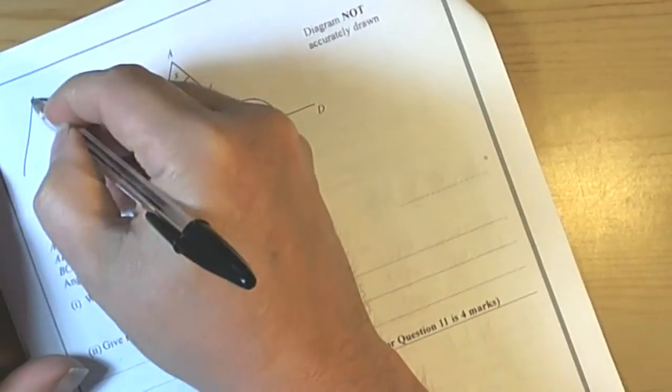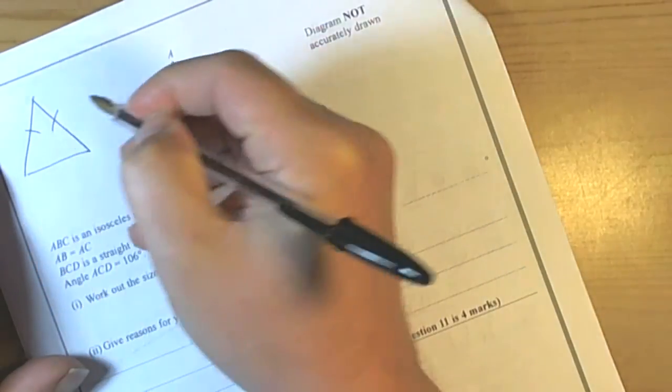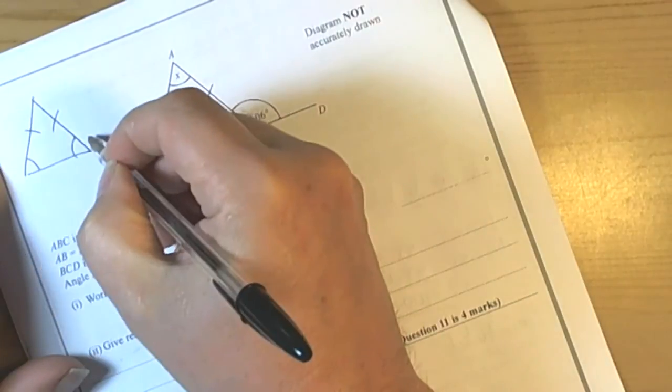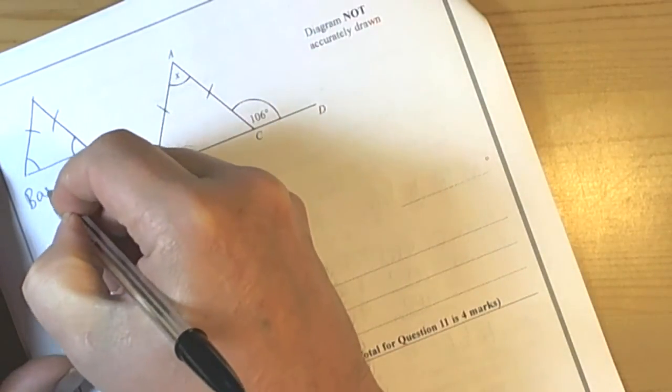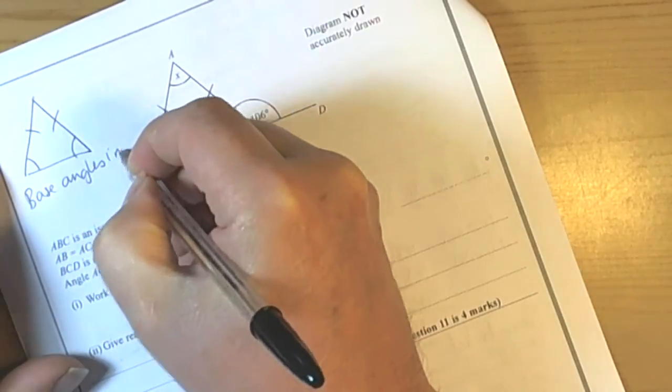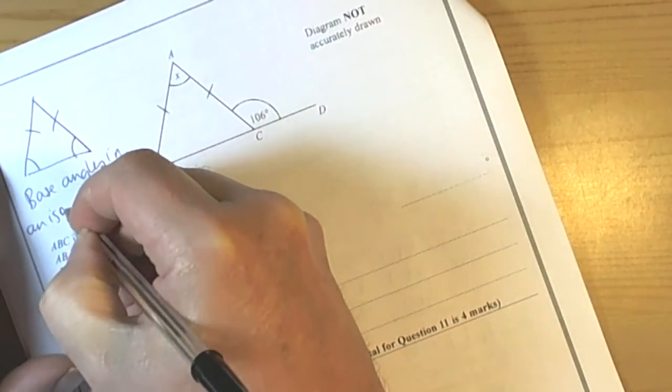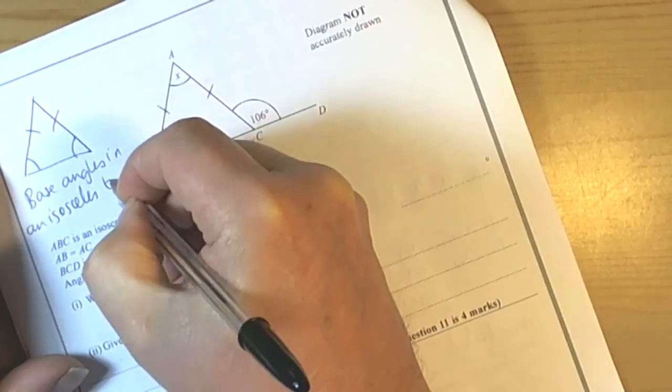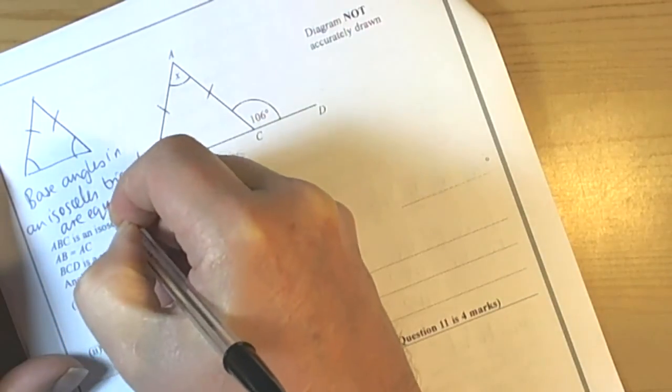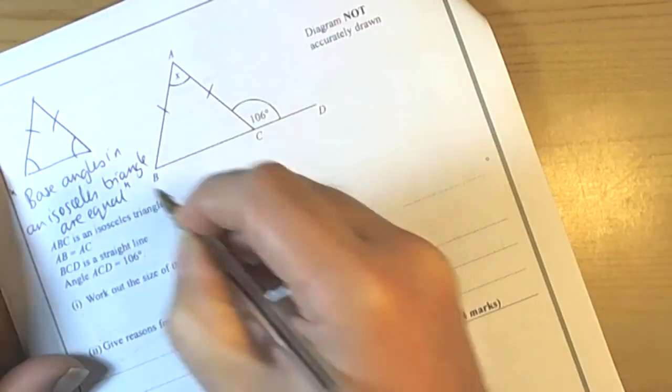Well, the things we've got to remember about isosceles triangles are that two side lengths are the same, but also the base angles are equal. So it's really important we have that full language. Base angles in an isosceles triangle are equal, so we need to have the full language to get full marks in the exam.